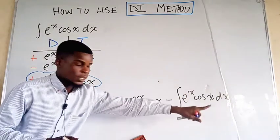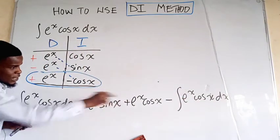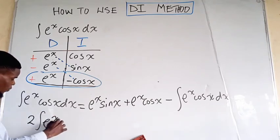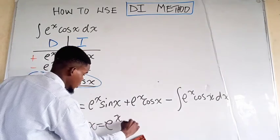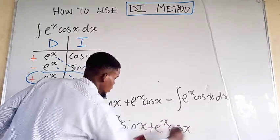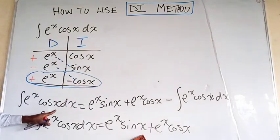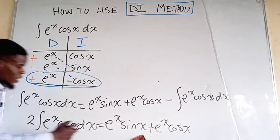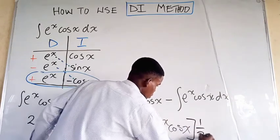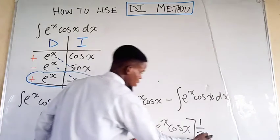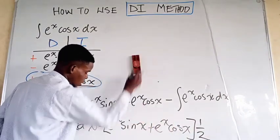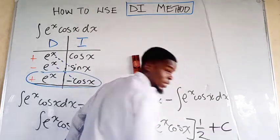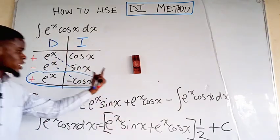So what we need to do now is collect like terms and make the original integral the subject of the formula — add this one to both sides. If you move this over to this side, it becomes this plus that, which is two of that. That is: two times the integral of e to the power of x times cosine of x dx equals e to the power of x times sine of x, plus e to the power of x times cosine of x. Dividing both sides by two, and splitting the right side, we get e to the power of x times sine x over two plus e to the power of x times cosine x over two, and we add an arbitrary constant. That right there is the antiderivative of the given function using the DI method.